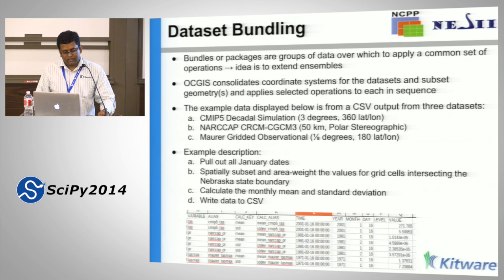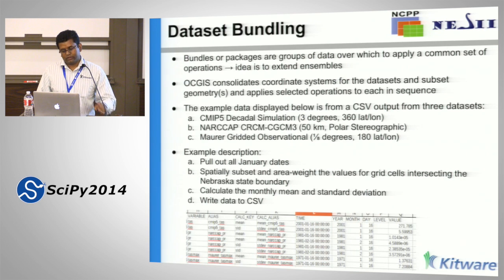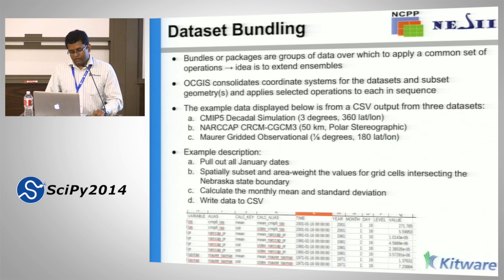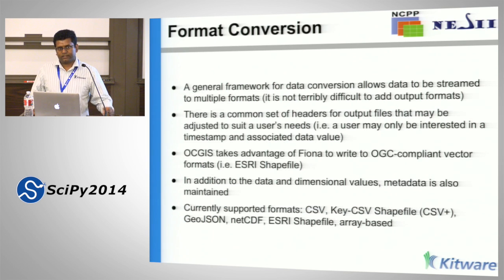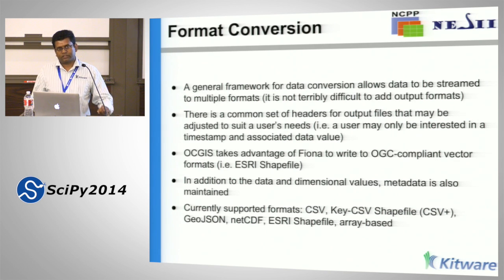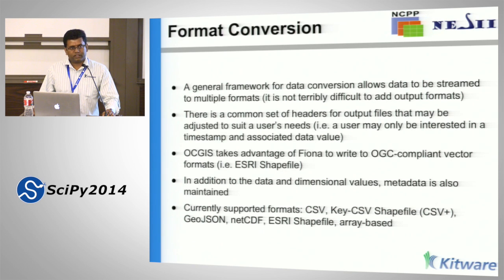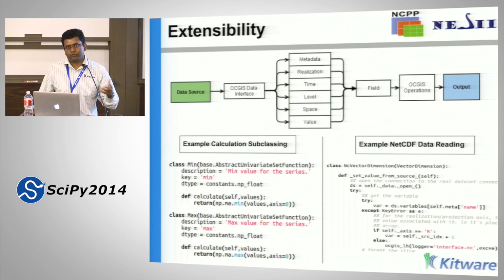The dataset bundling concept lets you run a particular set of operations on a variety of different datasets, and the framework takes care of all the conversions itself so you don't have to worry about them as a user. For format conversion, most GIS libraries expect data in Esri shapefile or similar formats, while most climate data is in NetCDF or GRIB—formats that are not GIS-friendly. Open Climate GIS provides a simple function call that converts data into GIS-friendly formats, including CSV, GeoJSON, NetCDF, Esri shapefile, or array-based output that can be visualized in toolkits like matplotlib.